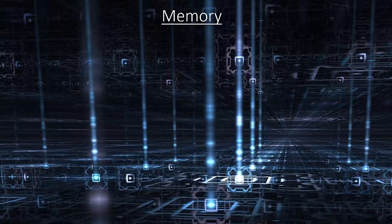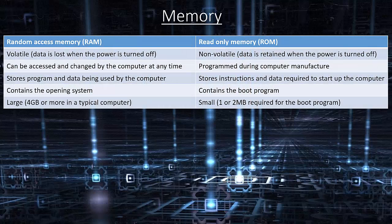Memory. Random access memory, also known as RAM, is volatile, which means data is lost when the power is turned off. It can be accessed and changed by the computer at any time. It stores programs and data being used by the computer, and contains the operating system. A typical computer has 4 gigabytes or more of RAM.